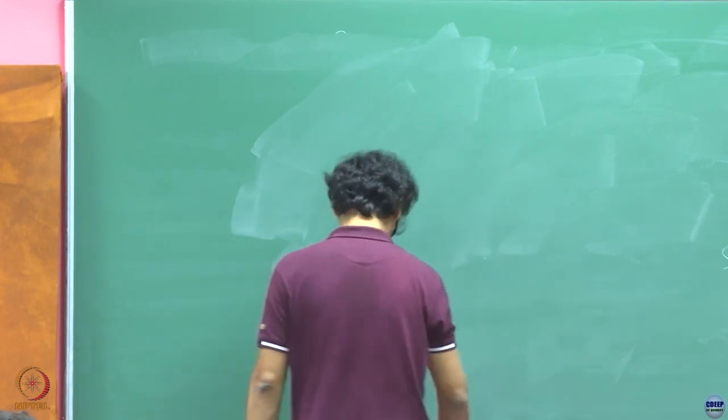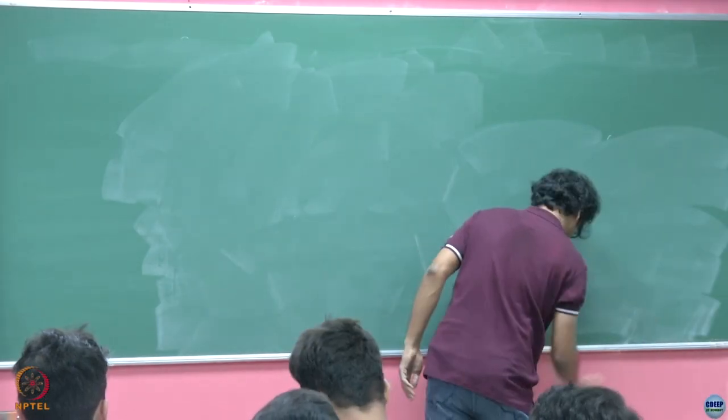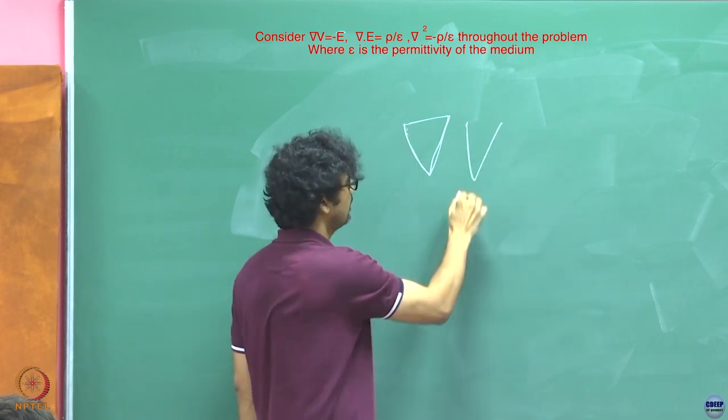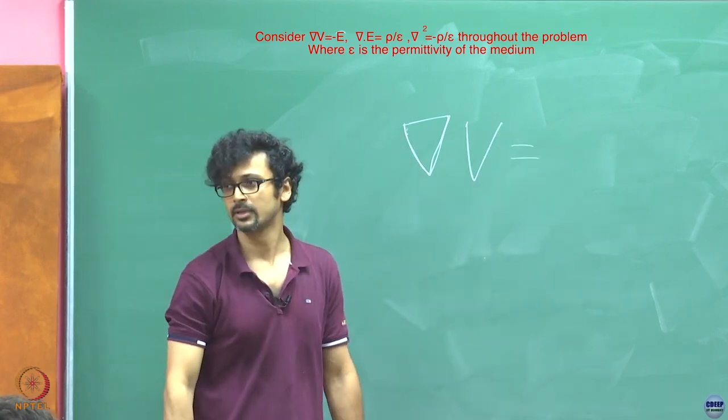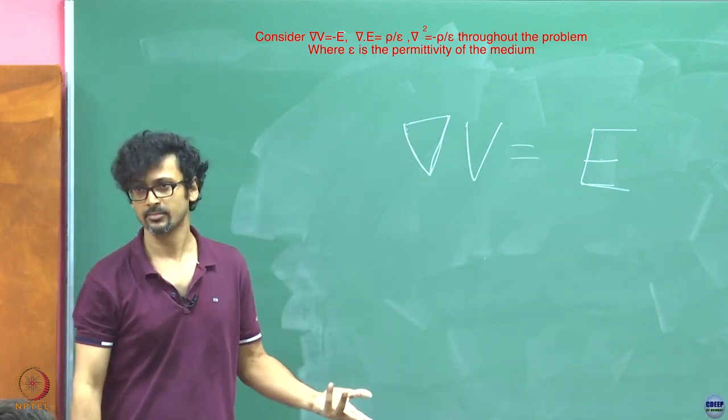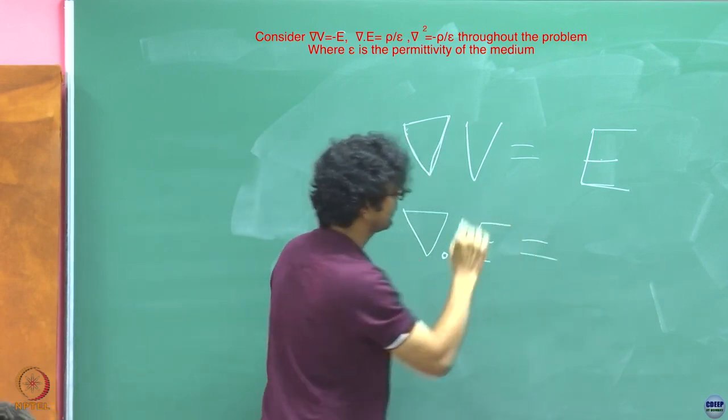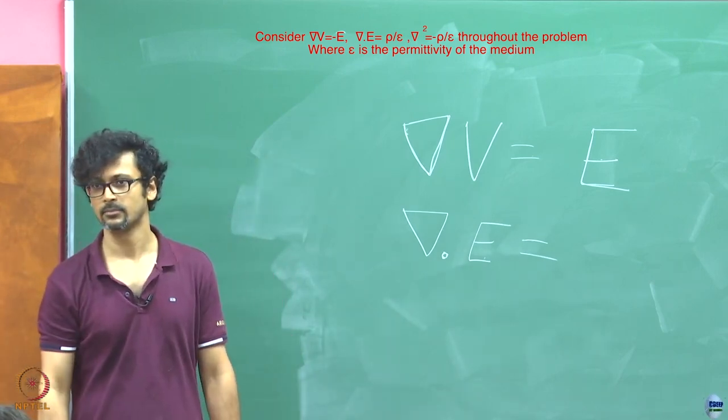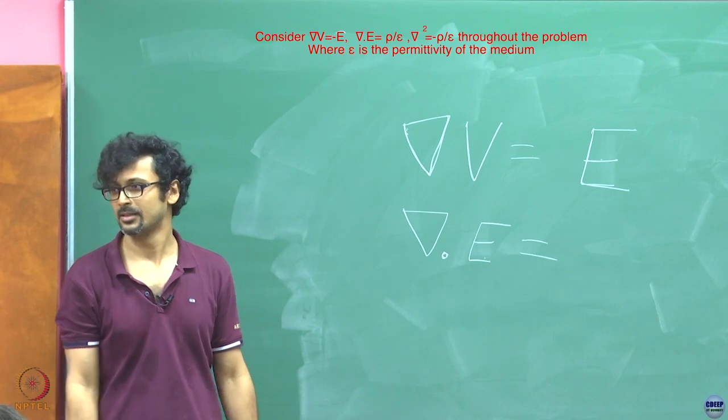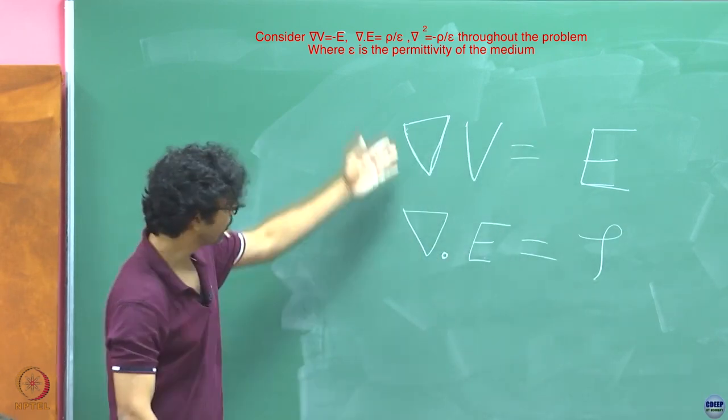So you know this equation that we come across in field theory which says that the gradient of the potential is equal to what, the field, the field intensity, isn't it. And what else, what is the divergence of this. It is rho, it is the charge density. So if you combine these two together, what you end up with, divergence of the grad, it is what we call the Laplace's equation.